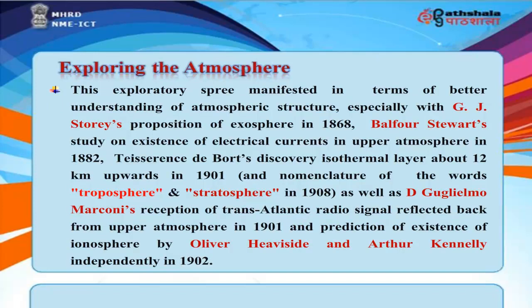This exploratory spree resulted in better understanding of atmospheric structure, especially with G.J. Storri's proposition of exosphere in 1868, Balfour's study on electrical currents in the upper atmosphere in 1882, Tiserens de Bort's discovery of an isothermal layer about 12 kilometers upwards in 1901, nomenclature of troposphere and stratosphere in 1908, Guglielmo Marconi's reception of transatlantic radio signals reflected from the upper atmosphere in 1901, and the prediction of the ionosphere by Oliver Heaviside and Arthur Kennelly independently in 1902.